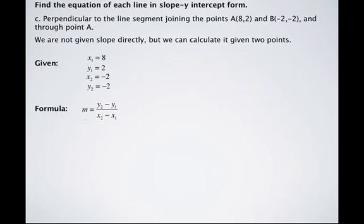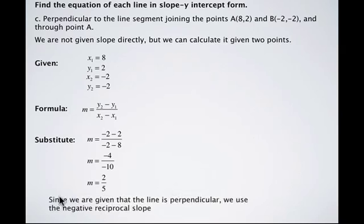...we get -2 minus 2 over -2 minus 8, which equals -4 over -10, which simplifies to be 2/5.